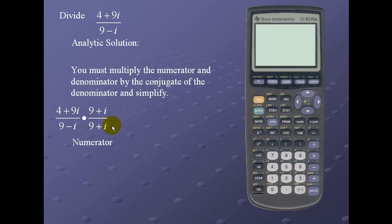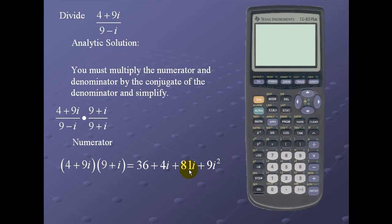Let's multiply the numerators using the FOIL method. The first terms give 36, the outermost term is 4i, the innermost term is 81i, and the last term is 9i². Simplifying and using the fact that i² = -1, the numerator simplifies to 27 + 85i.